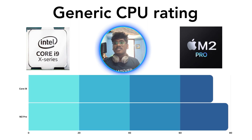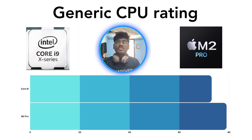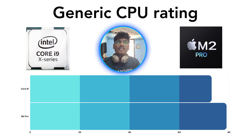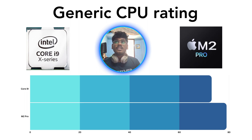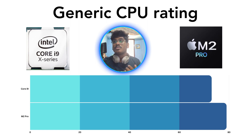Next, looking at the generic CPU rating based on overall performance: the Intel i9 scores 73 and the M2 Pro scores 79. However, these reviews are number-based only, and based on your specific requirements, the results may vary slightly.